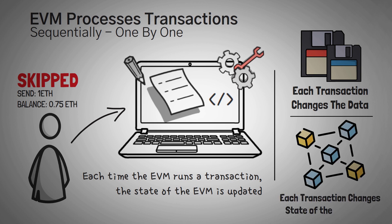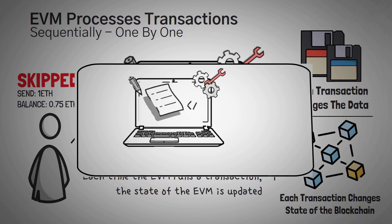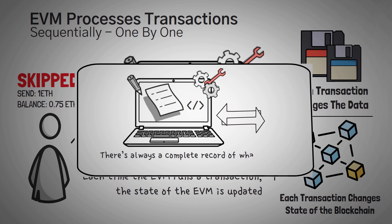Each transaction changes the state of the blockchain. If you wanted, you could make a copy of the blockchain and roll it back to any state in the past. In short, each time the EVM processes a transaction, there's always a complete record of what the EVM consisted of before and after the transaction, and this list of transactions is what we call the blockchain.